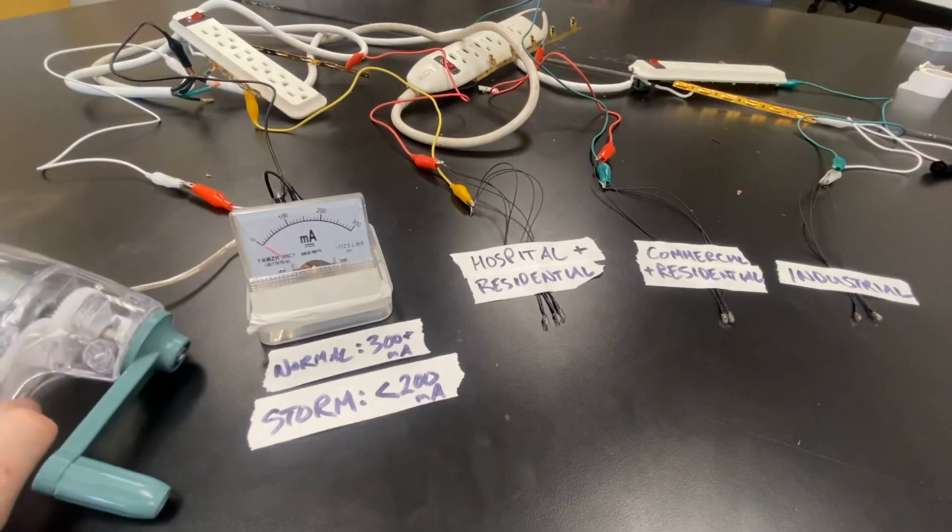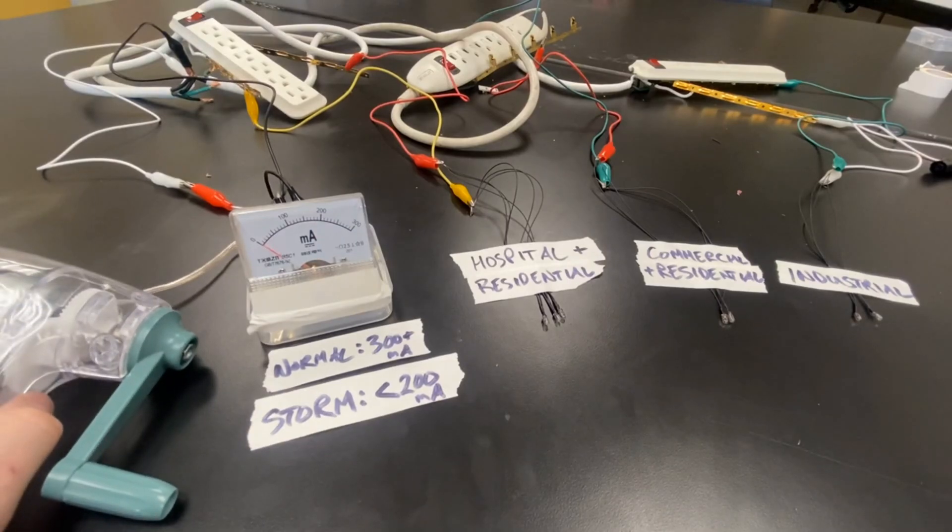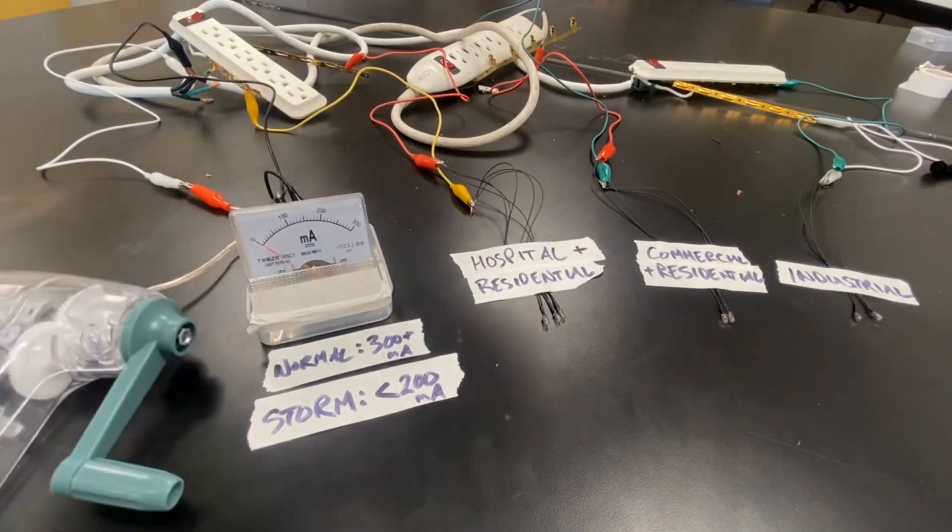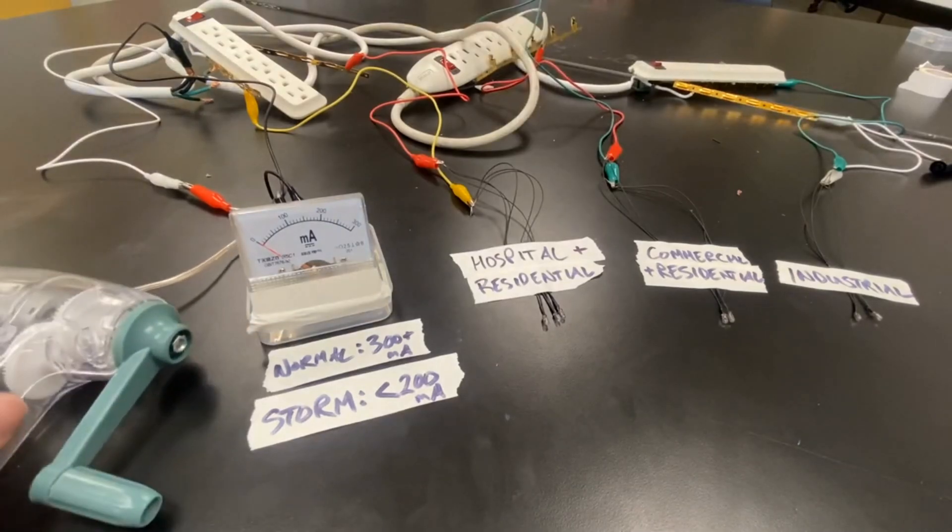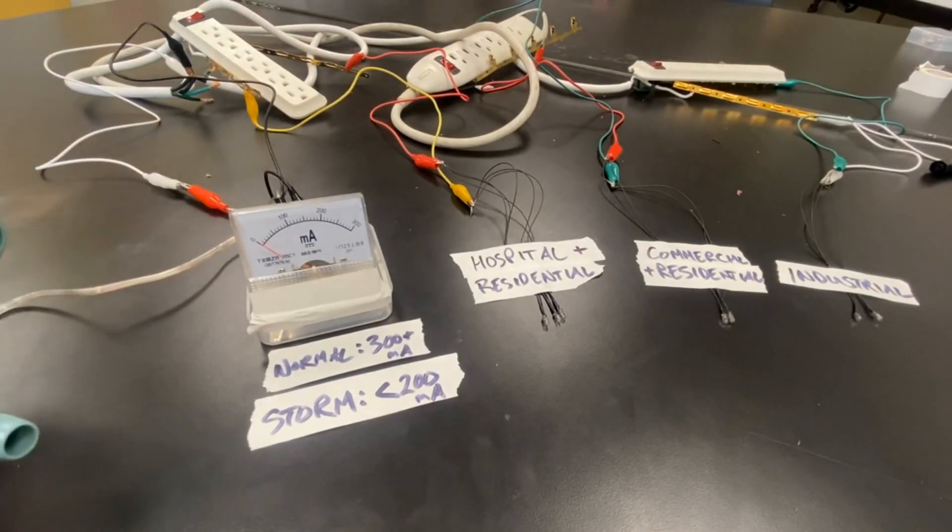So the question becomes, what do we do in this situation? What decisions do we have to make? One thing that we could try is using the substation switch to turn off the industrial region because during the storm, we don't care as much about manufacturing goods.